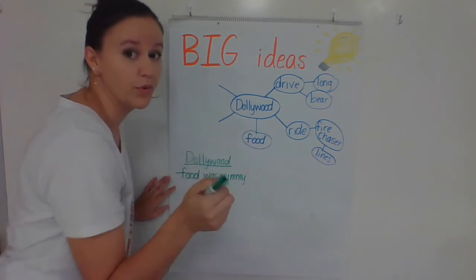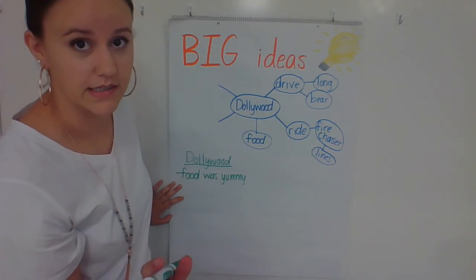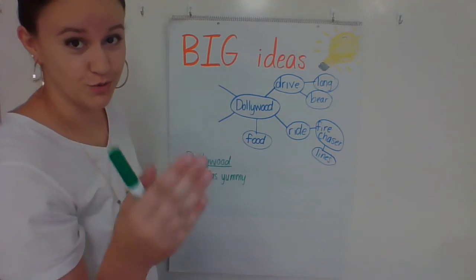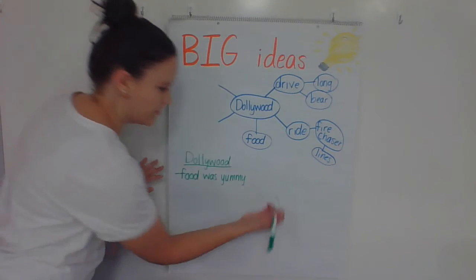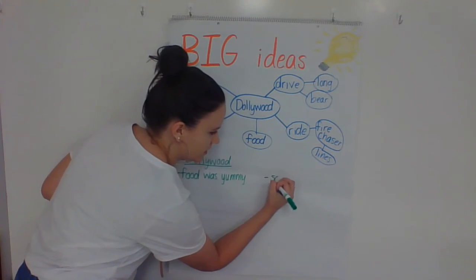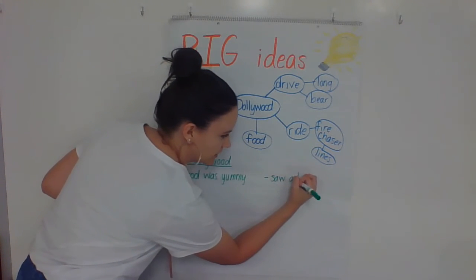But when you list, you don't have to write in complete sentences. When you start writing, you are supposed to write in full sentences. But lists don't have to be complete. So, Dollywood's food was yummy.